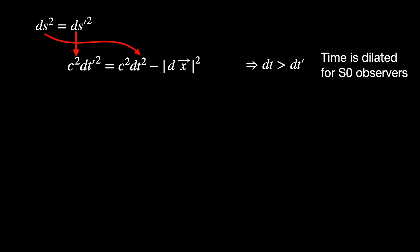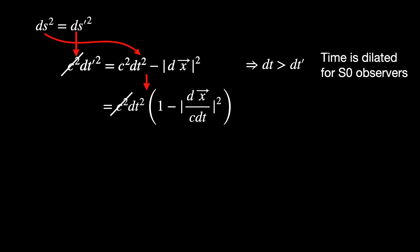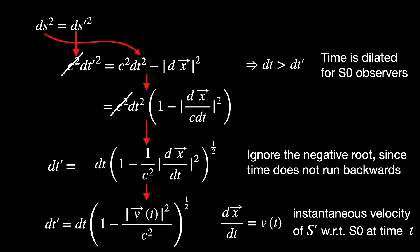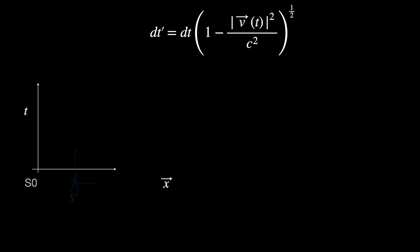Now we can give this equation a makeover to make it look like what we see in relativity textbooks. We pull out c²dt² from the right-hand side, get rid of the common factor c from both sides, take a square root, and ignore the negative root because time doesn't run backwards. Since dx⃗/dt is nothing but the instantaneous velocity vector v⃗(t) of the S' guy with respect to our S0 frame at time t, we may write |v⃗(t)|² on the right-hand side. Since v(t) and v(t+dt) are only infinitesimally different, we are saying that the S' guy is effectively moving with velocity v(t) during the entire duration dt — we can get away with this because it introduces an error that is second order in the infinitesimals. So now we have an equation depicting the time dilation effect between an inertial observer S0 and an arbitrarily moving observer S' having a time-varying velocity with respect to S0.